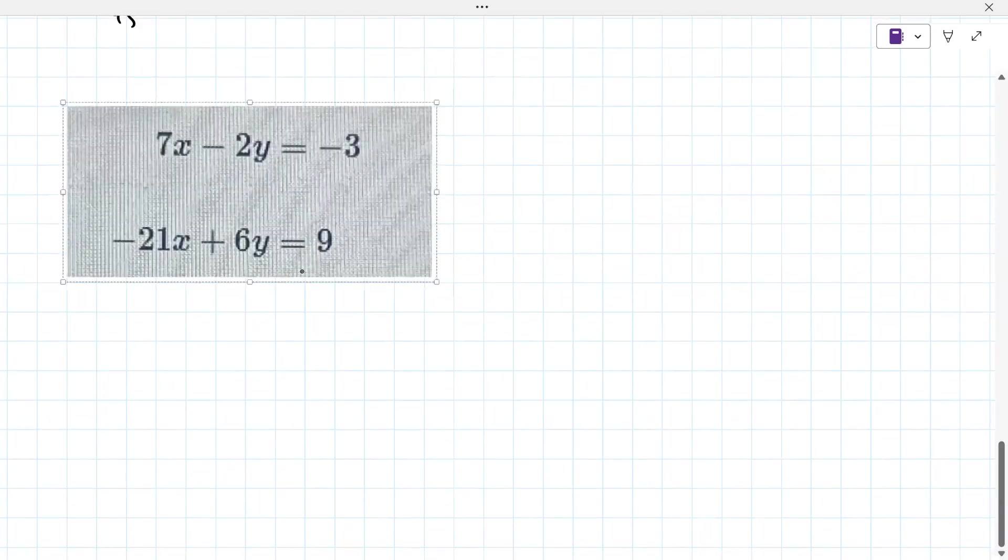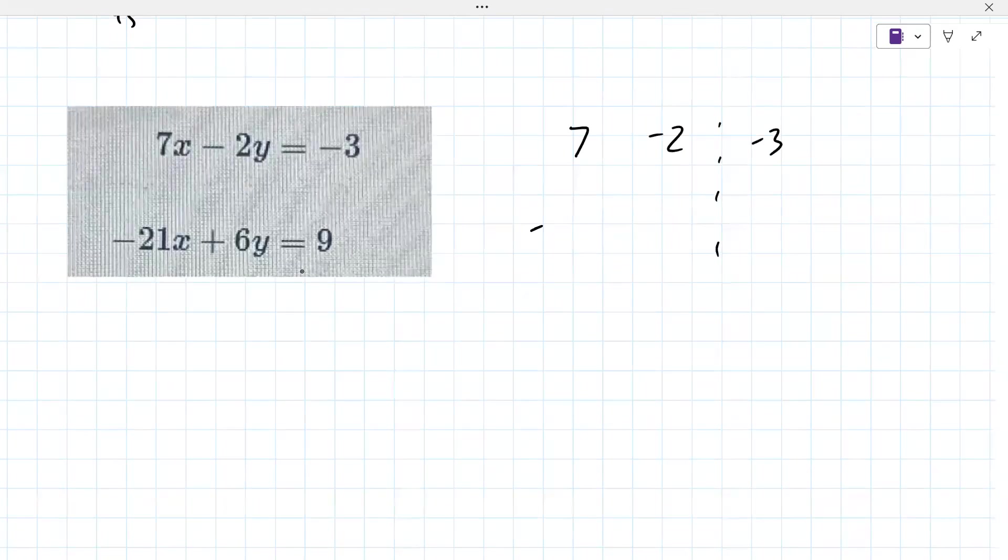So the matrix I'm doing here is 7, negative 2, negative 3, negative 21, 6 and 9. I can already tell that it's going to be a problem. Looks like it's either going to be inconsistent or infinite solutions. Let me confirm that here with the calculator.